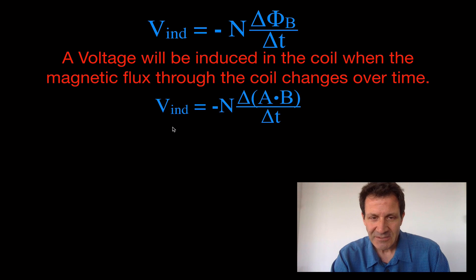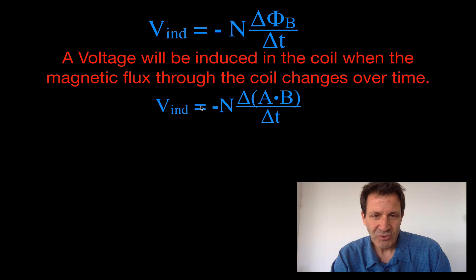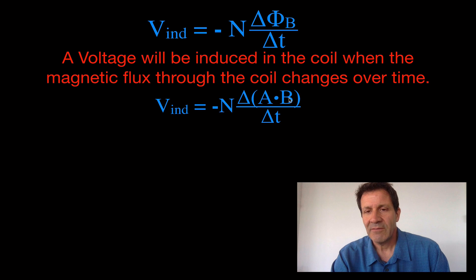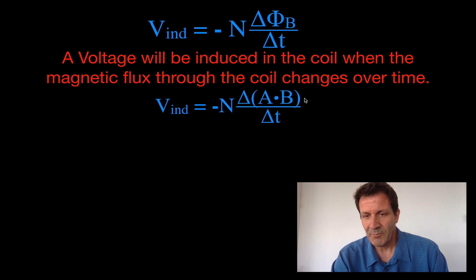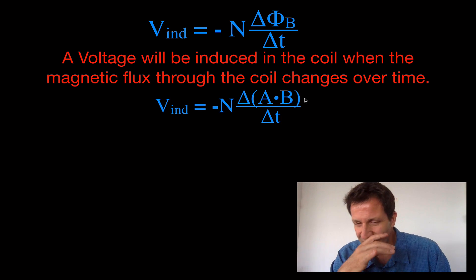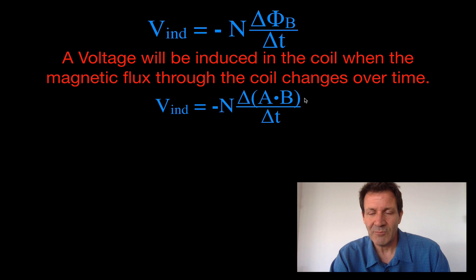I can also write Faraday's Law like this — this is the same equation, you'll see it written in different forms. The voltage induced is equal to minus N times the change in the magnetic flux. The magnetic flux is calculated as the area of the coil times the magnetic field strength, divided by the change in time. Sometimes you'll see a cosine of theta, which accounts for whether the coil is perpendicular to the magnetic field. We'll assume they are parallel, so the angle is zero and cosine of zero is one, so we leave that off.